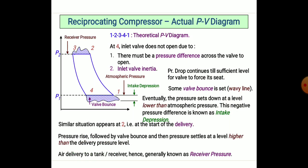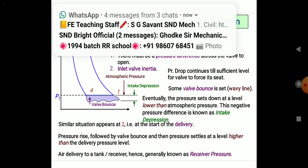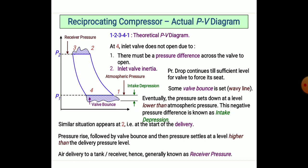In the actual PV diagram, the hatched area shown on screen represents the 'bouncing area.' In the reciprocating compressor, from stage 2 to 3 and from stage 1 to 4, this bouncing area represents one of the most important aspects causing various kinds of air leakages.